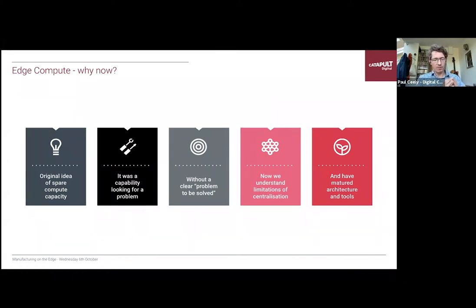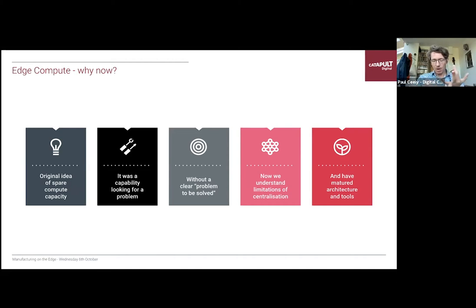So why now? The original idea was there was spare compute capacity and people could see that something non-central was useful. But it was a capability looking for a problem — and that's the slowest way of innovating. That's why I think it's taken a bit of time, because we've been finding these problems slowly. Now we're at the point where we have some very strong examples of where centralization doesn't work well — whether it's performance, cost, huge data volumes, or legal and commercial boundaries that mean you can't share things. We've been doing some work on federated learning to solve some of these problems. And we also now have the tools to manage this — hybrid models. The time has come, and I look forward to the rest of the speakers bringing these ideas to life.